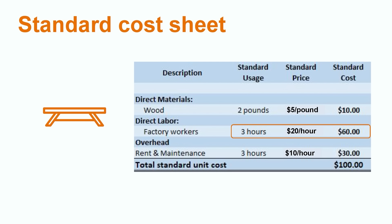We would also want to factor in the direct labor required to produce each table in the factory. In this case, the company is estimating that it takes three hours of work for each table, multiplied by an hourly rate of $20 per hour, giving us a total standard direct labor cost of $60 per table. Lastly, we would factor in the overhead, which are the indirect costs required to produce the tables, such as factory rent and maintenance on the machines. The company has calculated this based on the hours it takes to produce one table — three hours per table multiplied by a rate of $10 per hour, giving us a total standard overhead cost of $30 for each table produced.